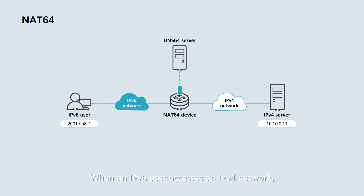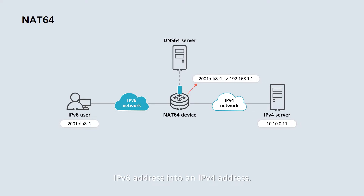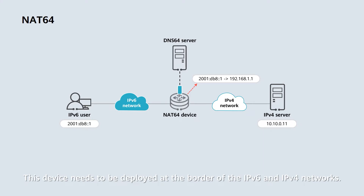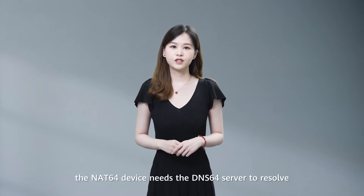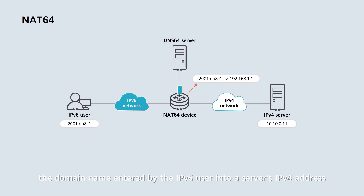When an IPv6 user accesses an IPv4 network, a NAT64 device needs to translate the user's IPv6 address into an IPv4 address. This device needs to be deployed at the border of the IPv6 and IPv4 networks. Before address translation, the NAT64 device needs the DNS64 server to resolve the domain name entered by the IPv6 user into a server's IPv4 address and to send the address information to the IPv6 user.